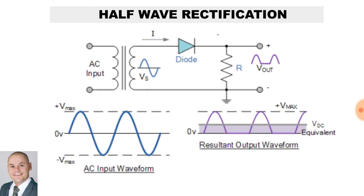To produce half-wave rectification from an AC input, we can use one diode in an AC transformer.